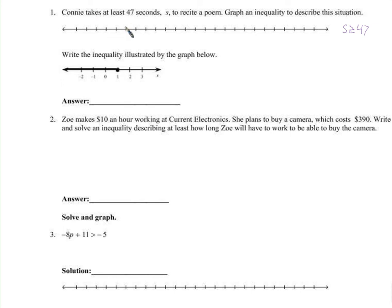So if this is 0, let's say we graph by 5: 5, 10, 15, 20, 25, 30, 35, 40, 45. So 47 would be right there — 47 or greater.